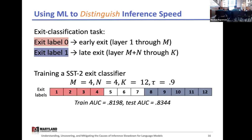With the sentiment classification task, we took the original SST2 samples, passed them through a multi-exit model, took note of the exit they took, and if they took exits one through four, we mapped them to exit label zero, and if they took exits eight through twelve, we mapped them to exit label one. As evidenced by the AUC scores, the model was able to learn this task pretty well.